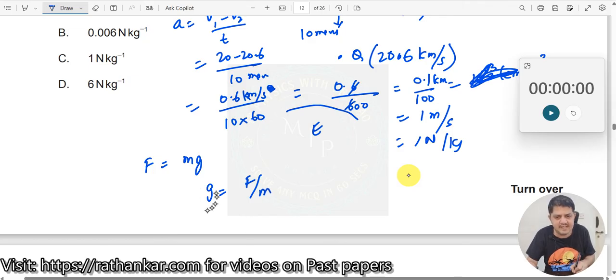If this has the standard units of meter per second squared, then this will have Newton per kg. Okay. So therefore, the answer is 1 Newton per kg. Answer is C.